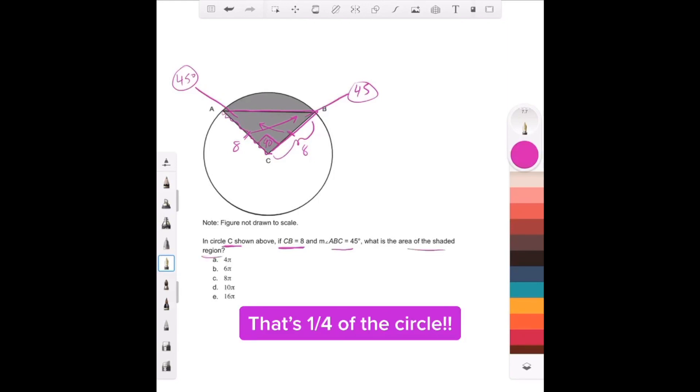So it's asking for the area of the shaded region, which is this. We're dealing with 90 degrees out of 360, so we're dealing with 1/4 of the circle.